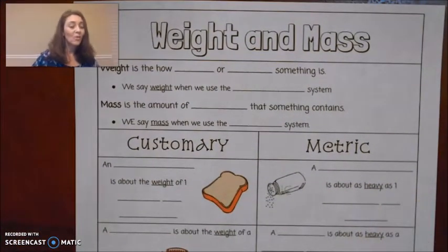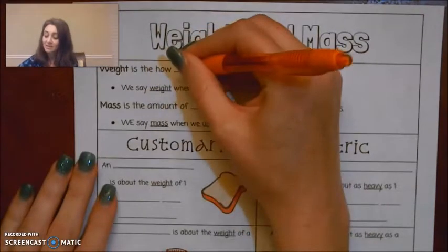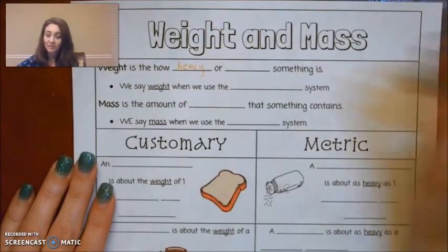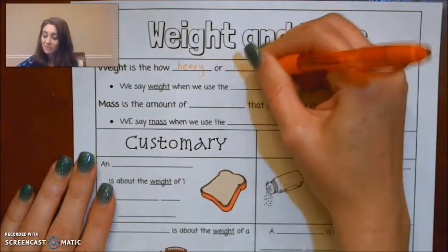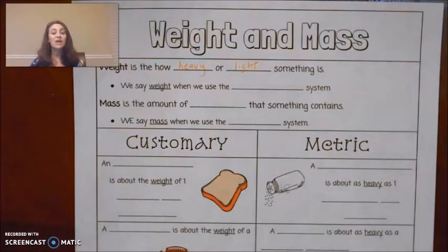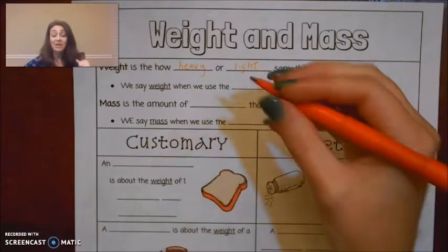All right, weight and mass. Weight is how heavy or light something is. Just like yesterday when we talked about the customary, what we use in America, and the metric, what they use in science and the rest of the world, they have that for length. They also have that for weight and mass. We say weight when we use the customary system.